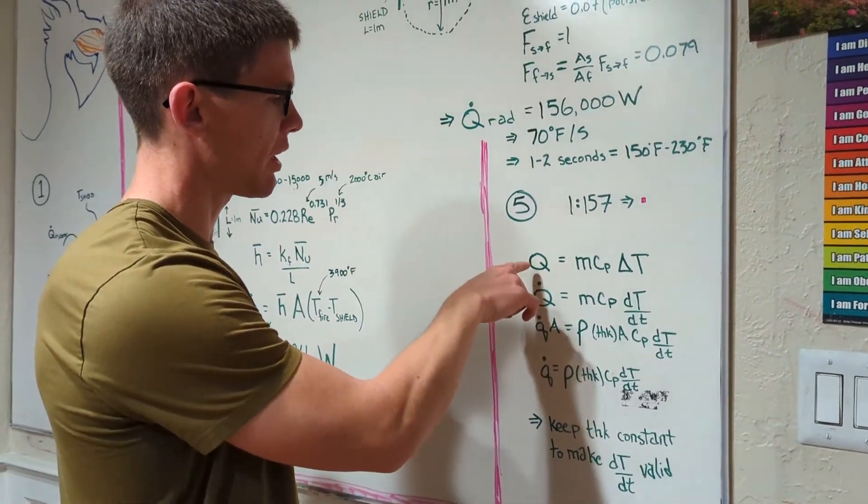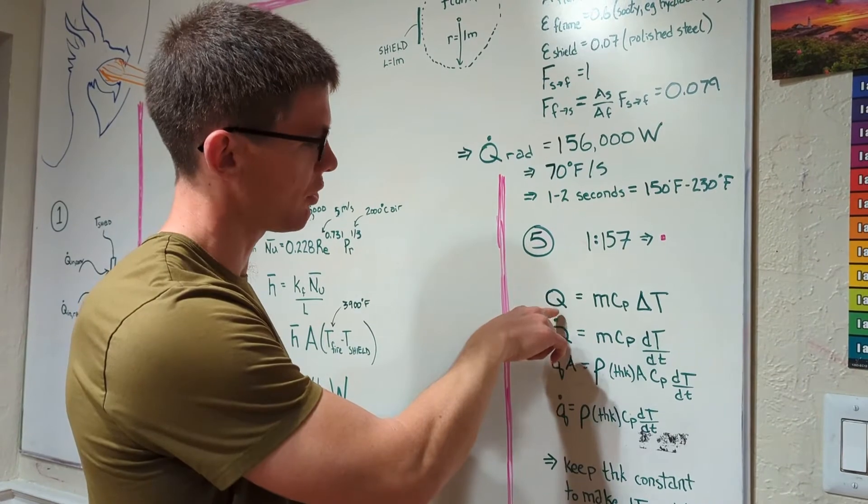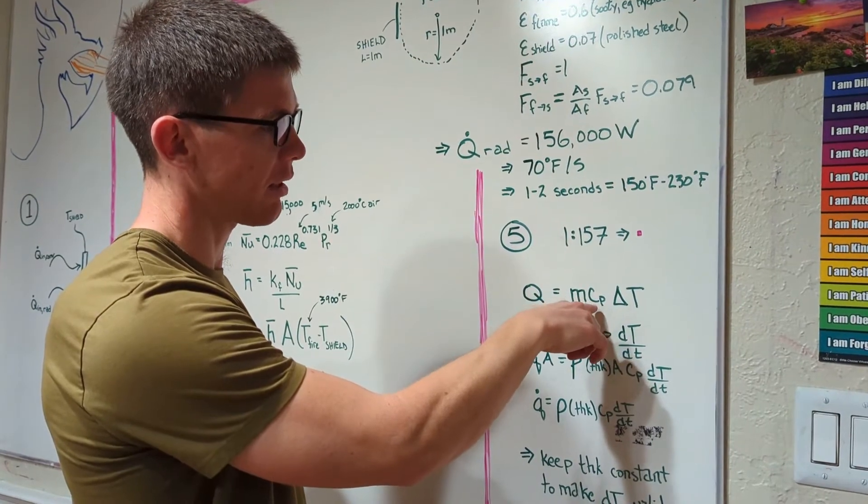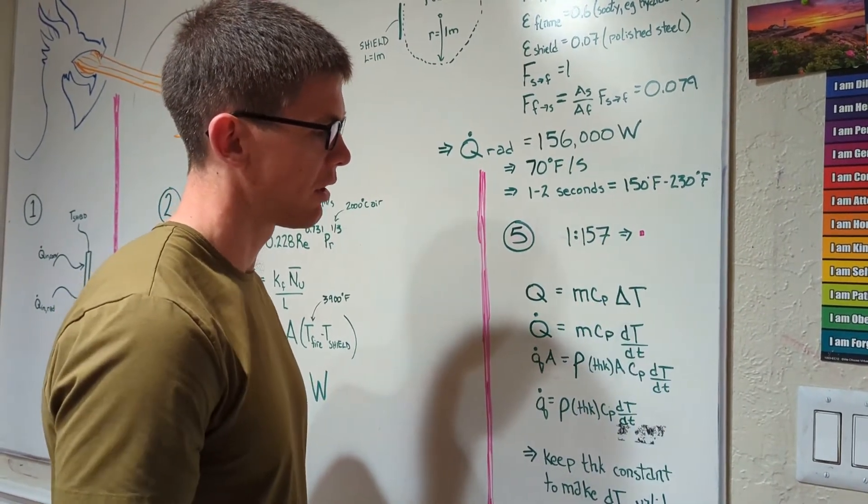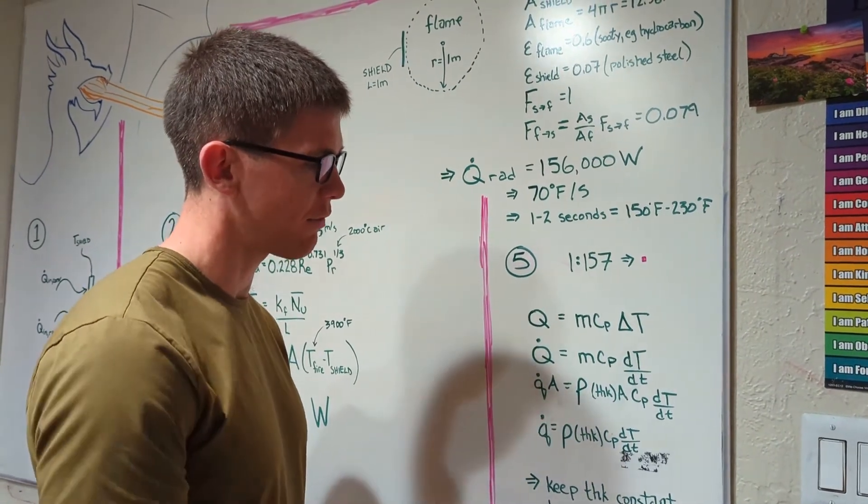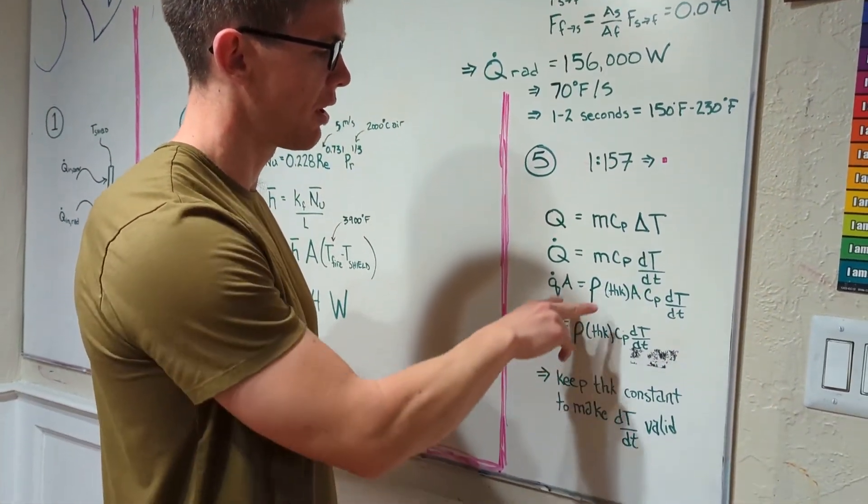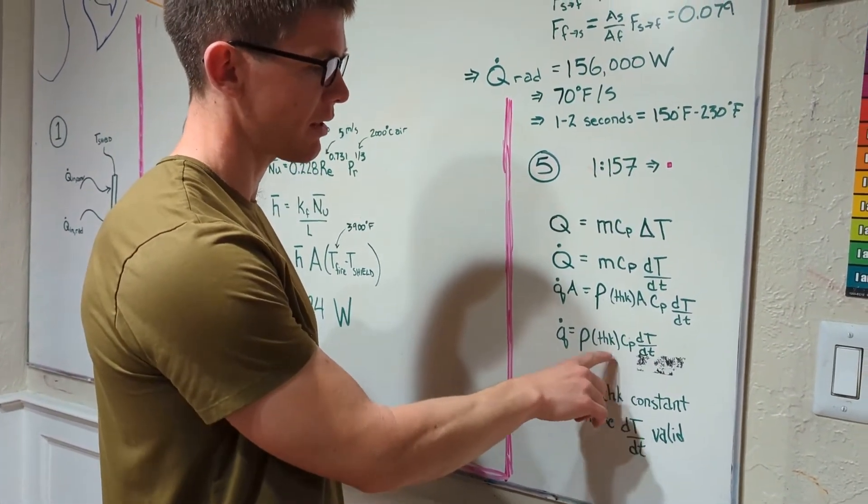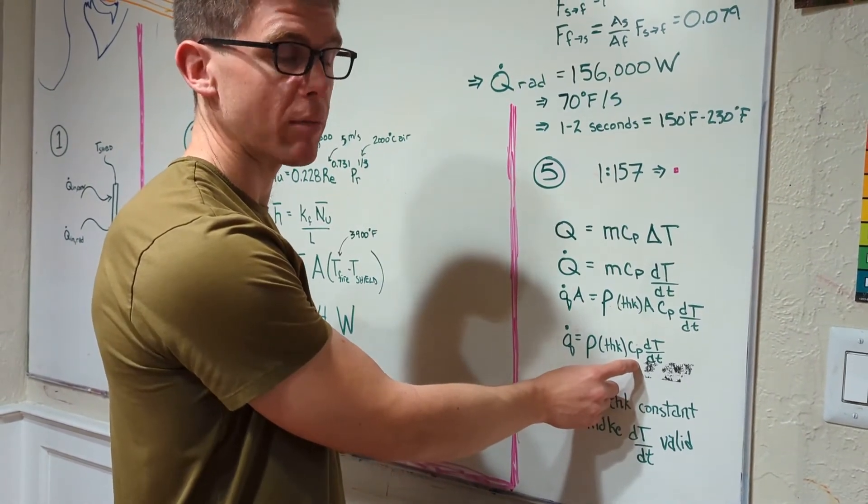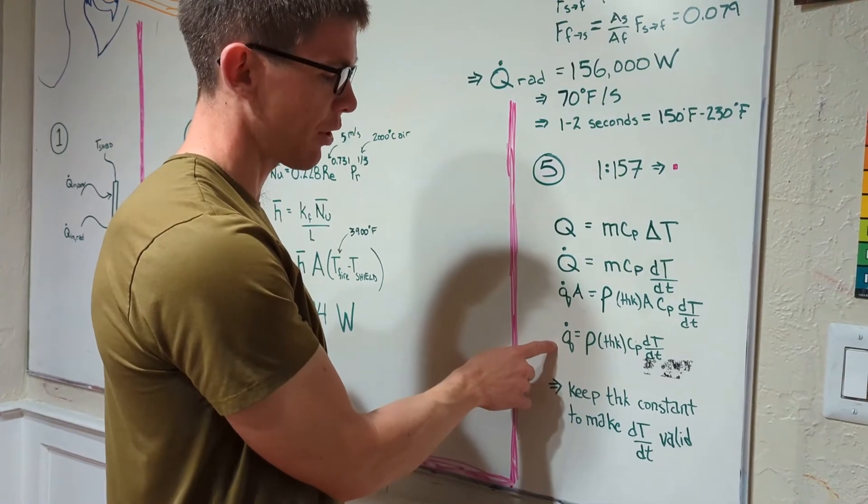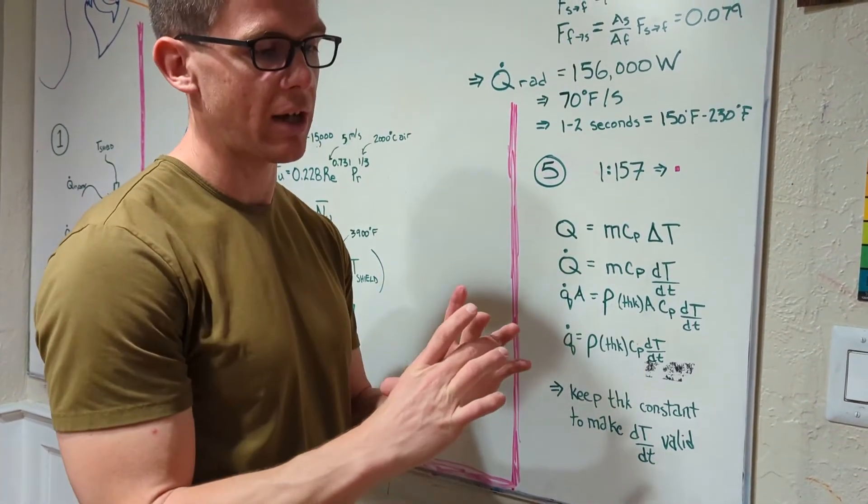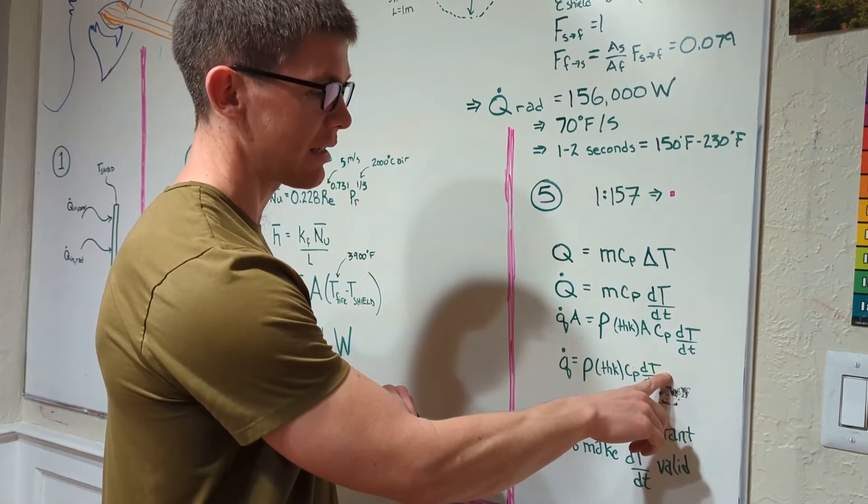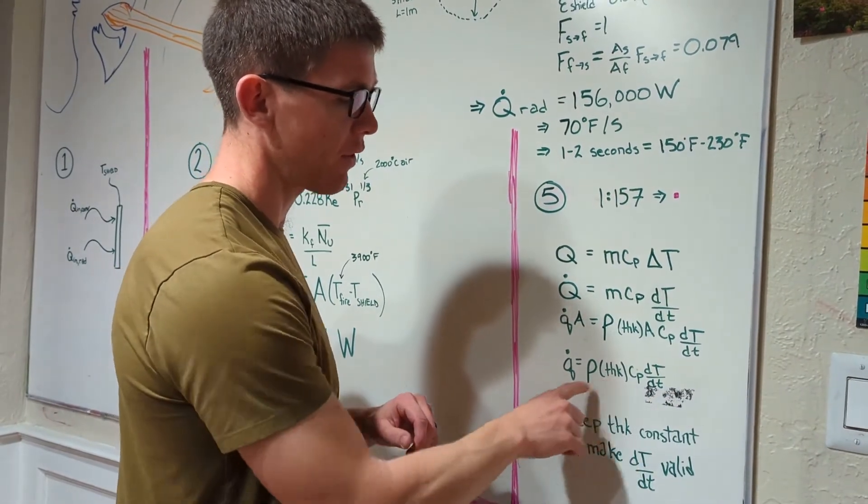If you look over here the basic heat equation for heating up a shield would be Q, the heat into the shield, matches the mass and the heat capacity of the shield times the delta T of the shield. So since we want to find the heat rate, how fast that shield heats up, we can turn that into a rate equation, turn it into density times volume, cancel out the area, and we end up finding that as long as we keep the density and heat capacity the same, which is keeping the material the same, keeping it steel, as long as we keep our heat flux per area the same, which we're going to do by shrinking down our dragon flame to match the size of the shield. Then we can get a valid D temperature D time by keeping the thickness of the shield constant.